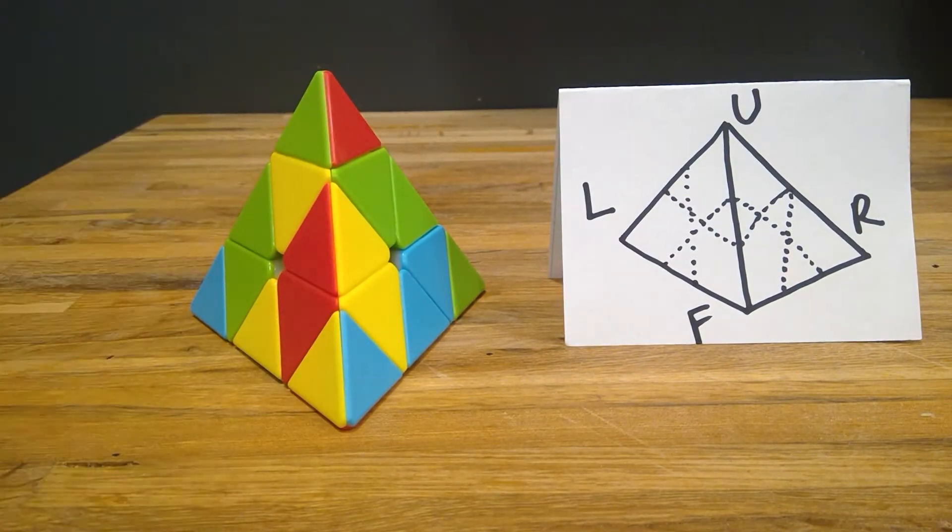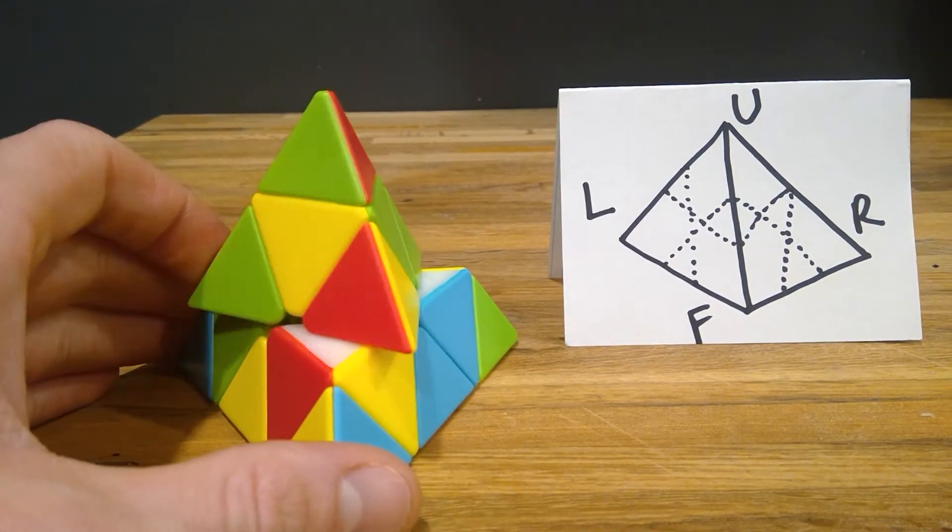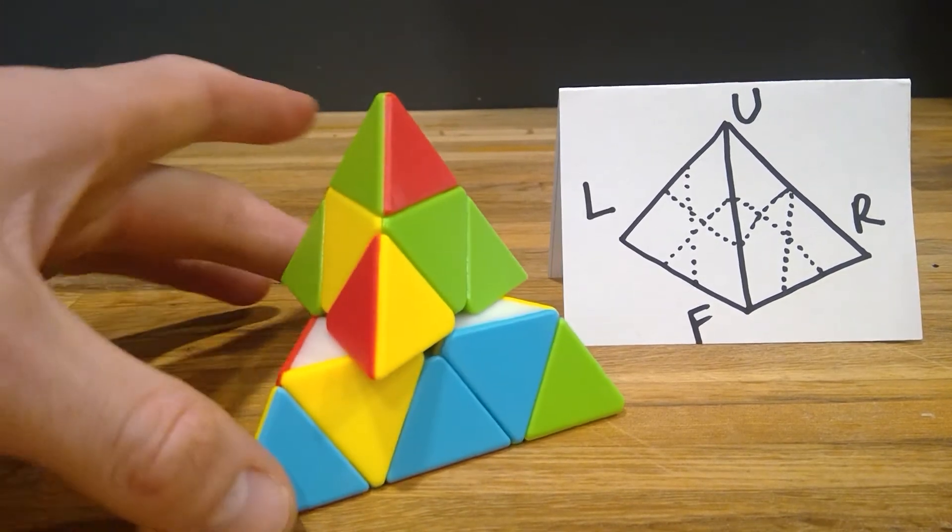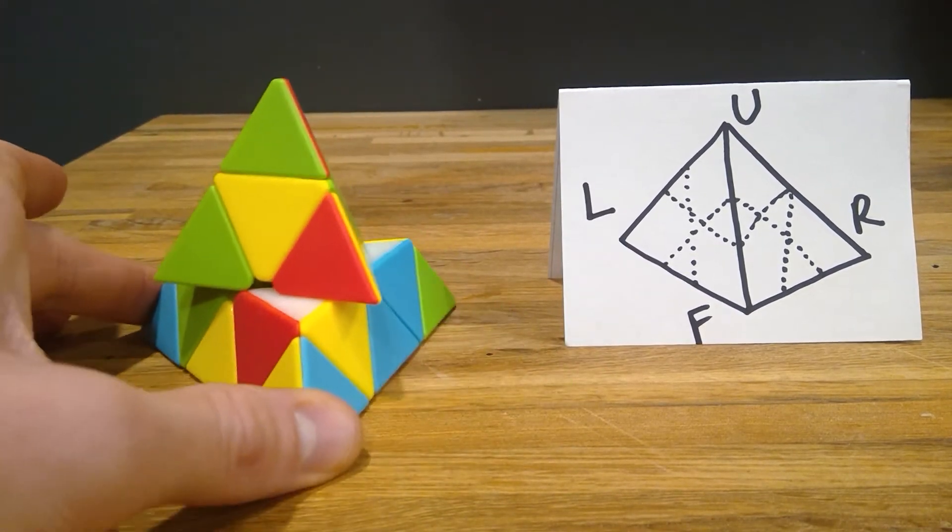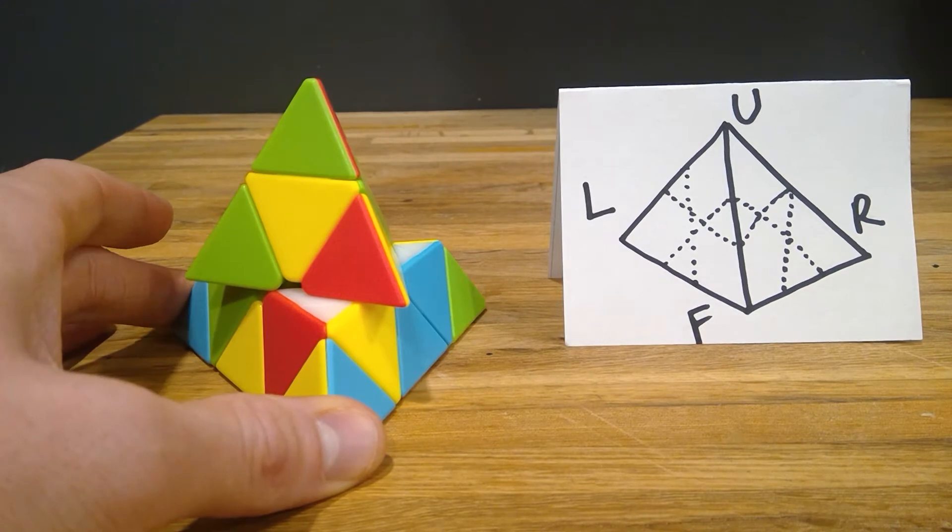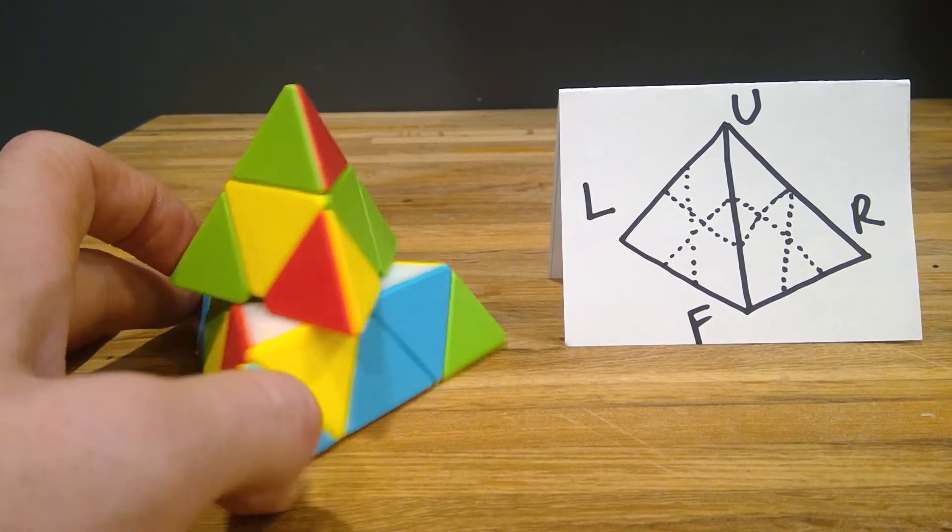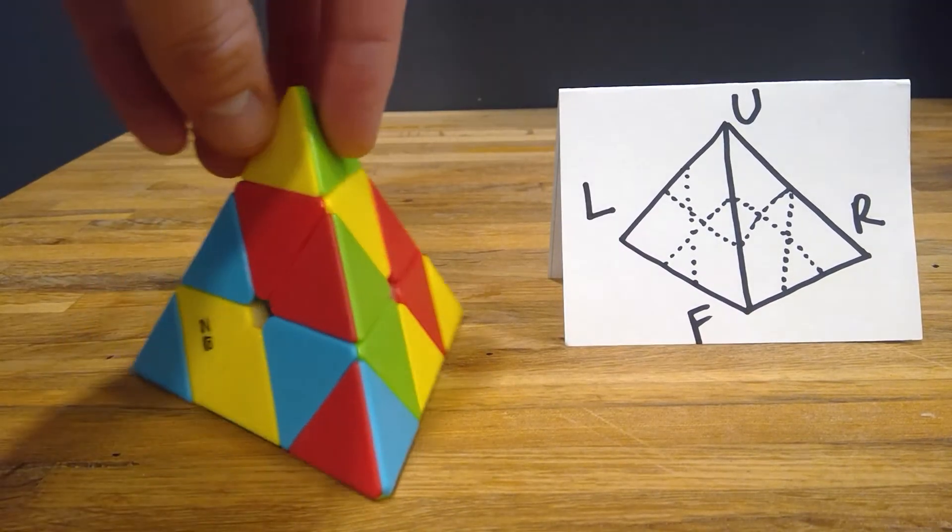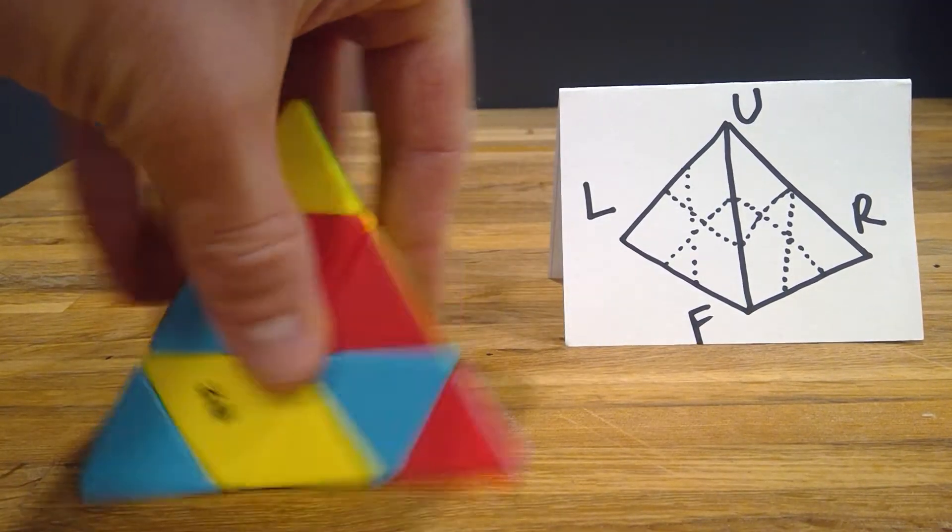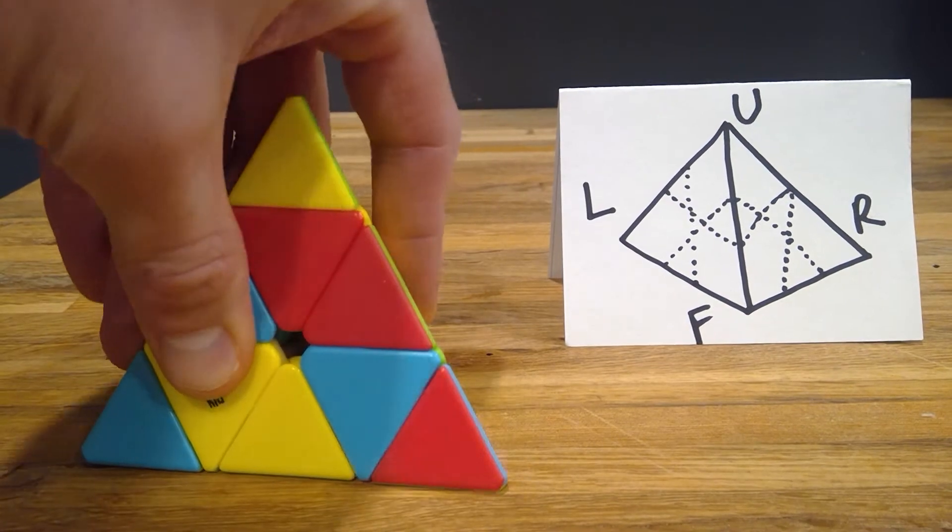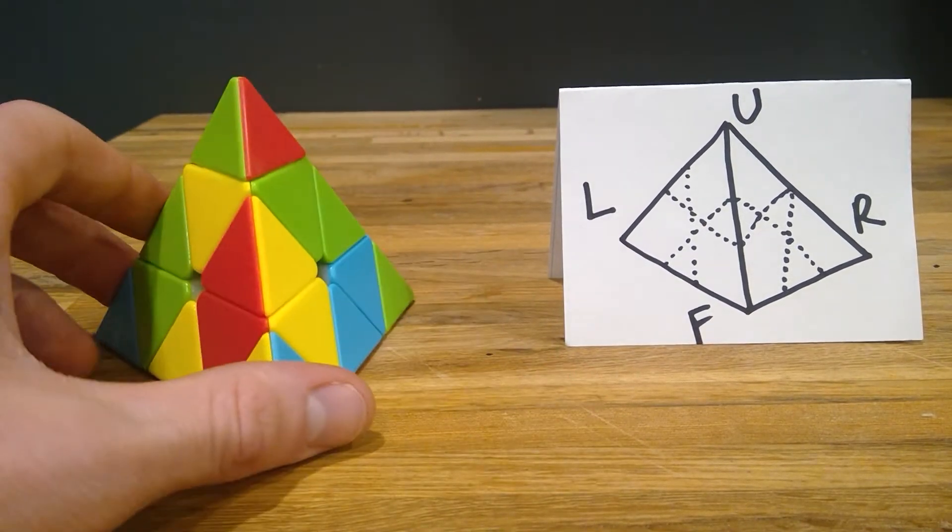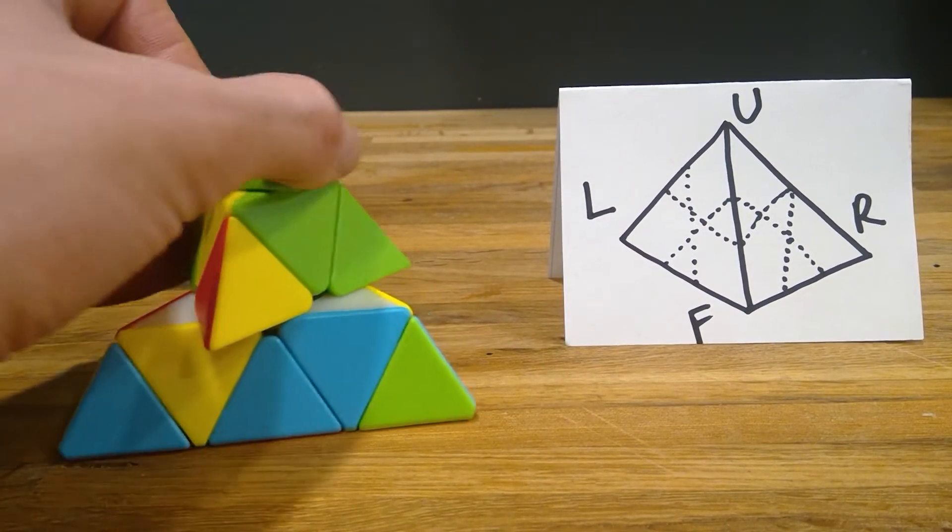Before we start, there's just a few things I need to point out about the Pyramix. First, I'm going to call this bottom section that's touching my counter a layer. I just want to point that out real quick. Also, if you look, there's a pyramid. It's not a real pyramid, but a three-sided. I don't think it's actually technically a pyramid. I'm not sure, so you can correct me if I'm wrong.